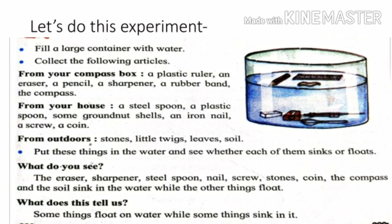In this experiment, we take a large container with water and add things to it. We learn that the eraser, sharpener, steel spoon, nail, screws, stones, coin, compass, and soil sink in the water, while the pencil, plastic ruler, and rubber band float on the water. This means some things float on water while some sink — things that float are lighter than water, and things that sink are heavier than water.